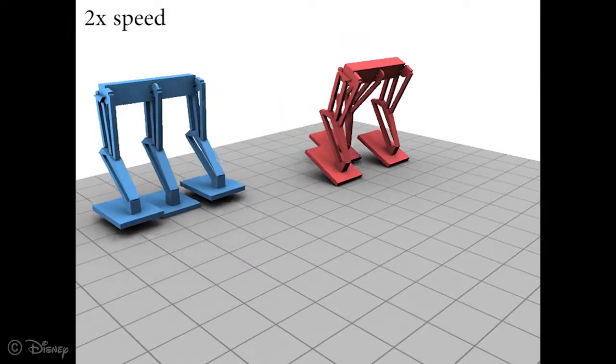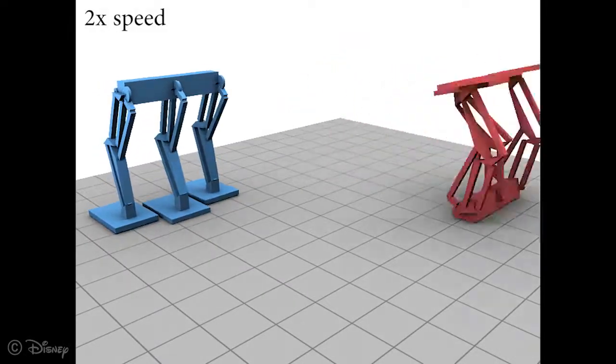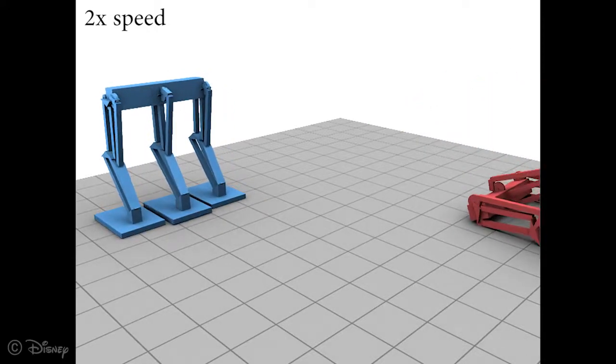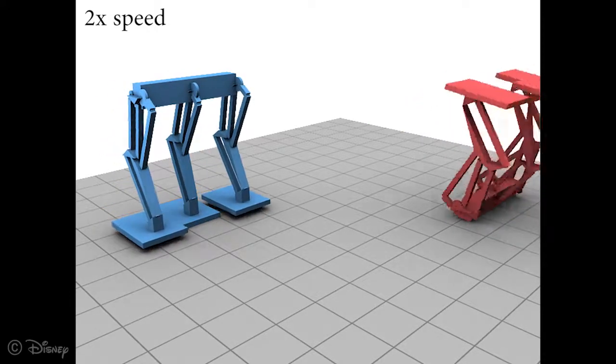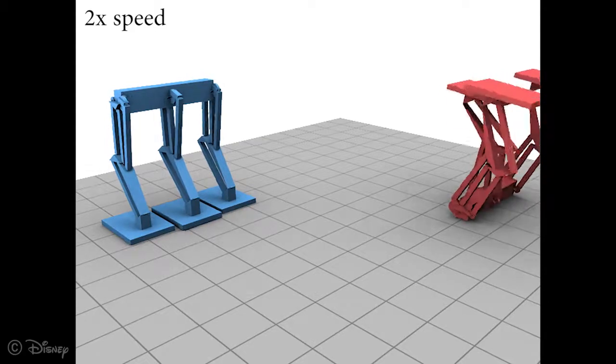We explore a three-legged automaton. The optimization discovers a gorilla-like gait, where a swing-through and support motion is alternated between the middle and outer legs.